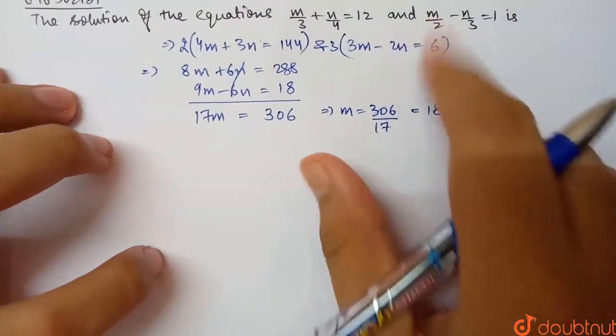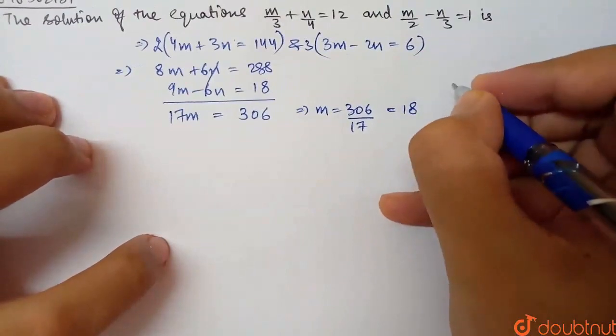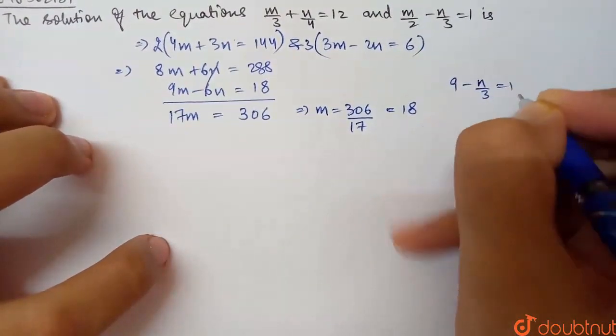Now I can substitute this value into any equation. Using m/2 - n/3 = 1, substituting m = 18 gives 18/2 - n/3 = 1, which is 9 - n/3 = 1.